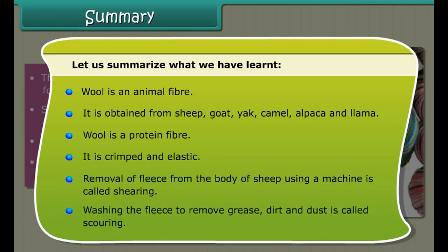Let us summarize what we have learned. Wool is an animal fiber obtained from sheep, goat, camel, alpaca and llama. Wool is a protein fiber — it is crimped and elastic. Removal of fleece from the body of sheep using a machine is called shearing. Washing the fleece to remove grease, dirt and dust is called scouring.